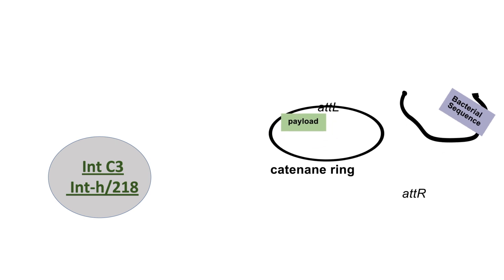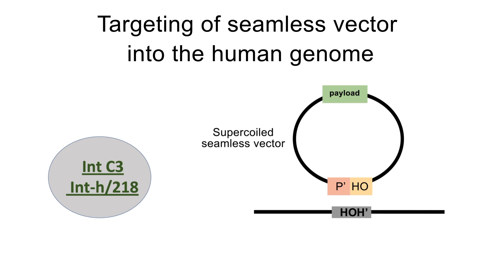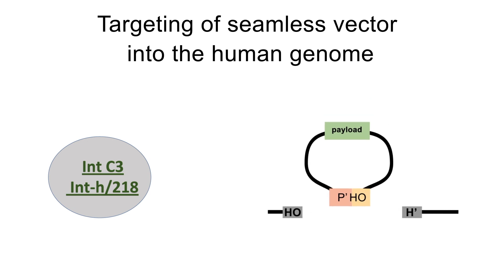The resultant product is a seamless vector with the desired payload, which is further targeted at an attH target site in the genome. Using attL sequence, it is then targeted specifically at site attH in LINE-1 elements using the integrase variants, resulting in better efficiency.